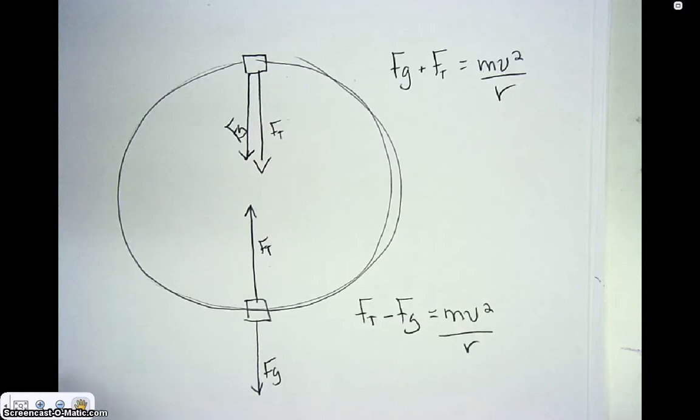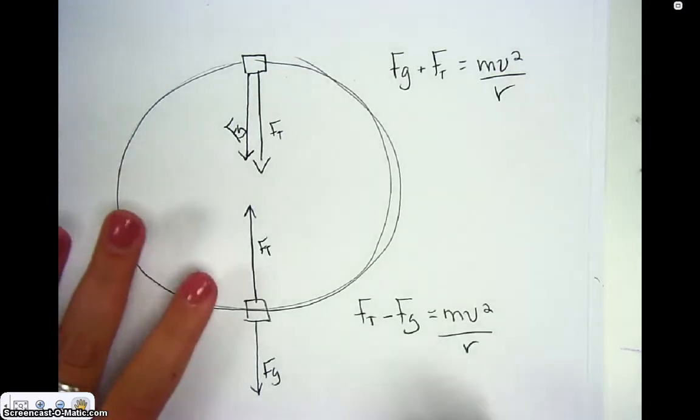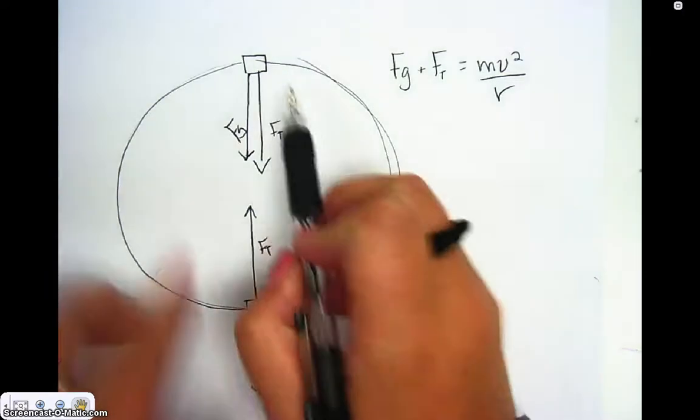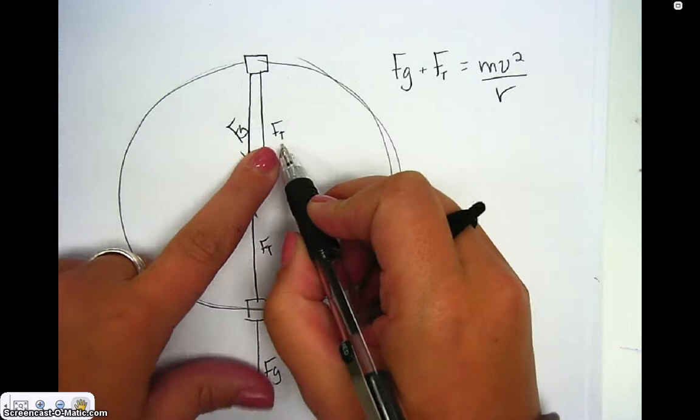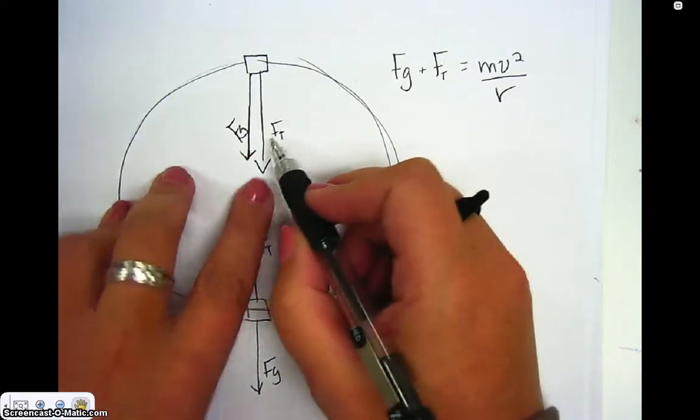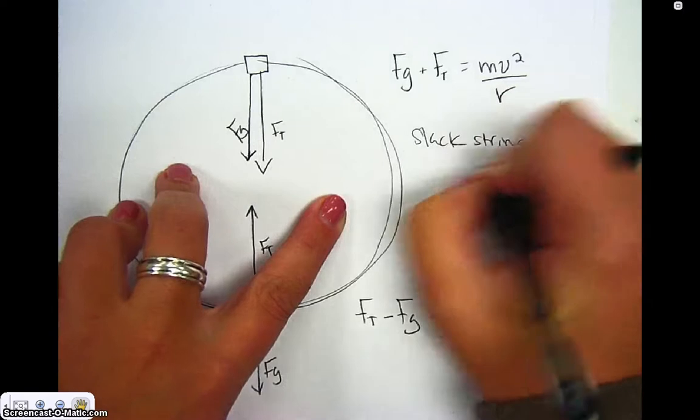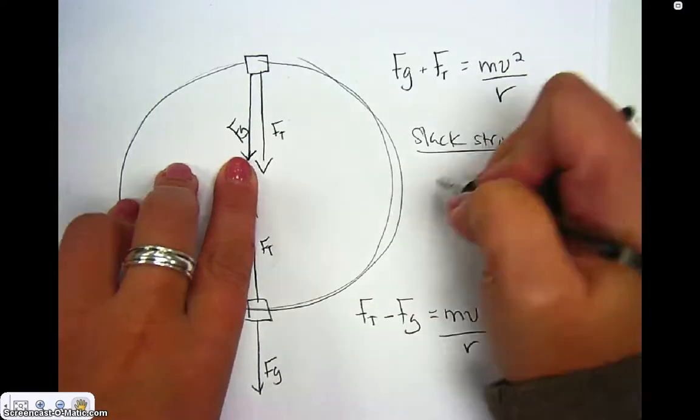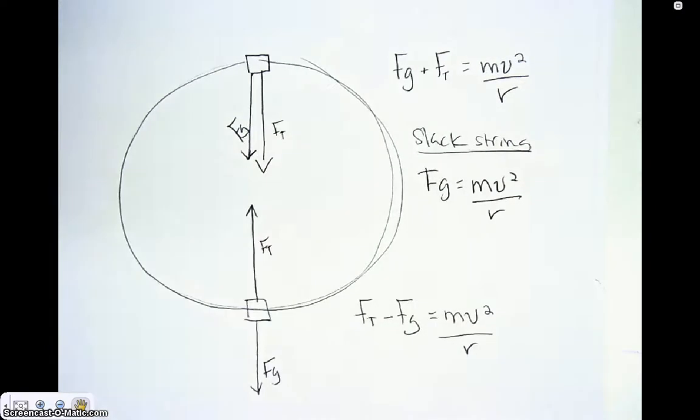Another thing and another way we might be asked questions is, what would be the velocity the stopper would be going if at the very tip-top of the motion, the string would just go slack? If the string went slack, then in that case, a slack string, we would have just Fg equaling mv squared over r. It's almost like there was no force in the string at all.